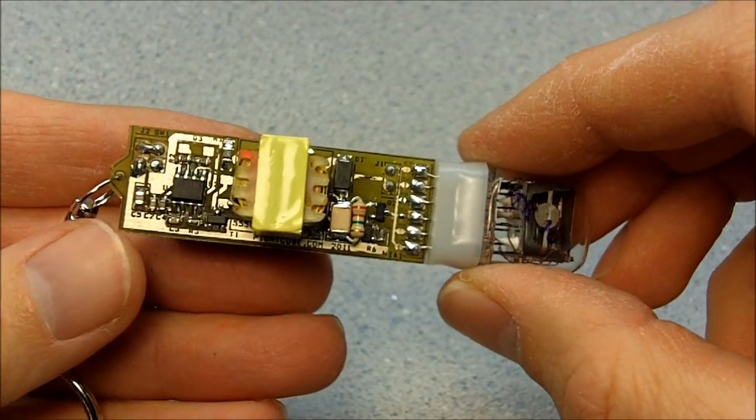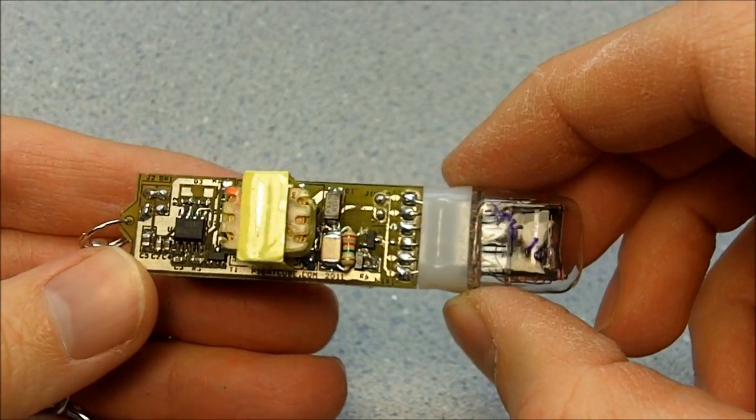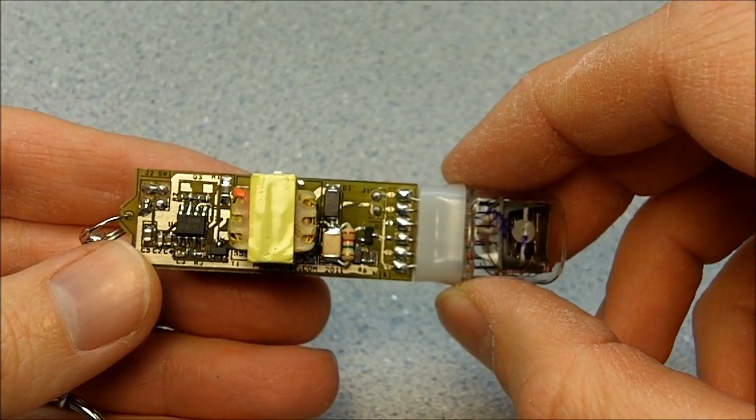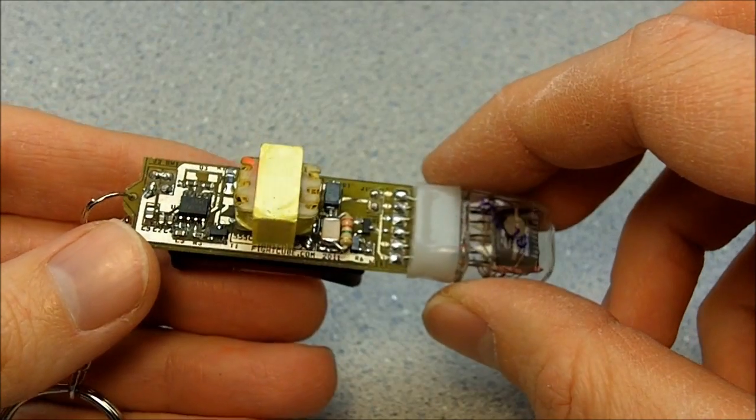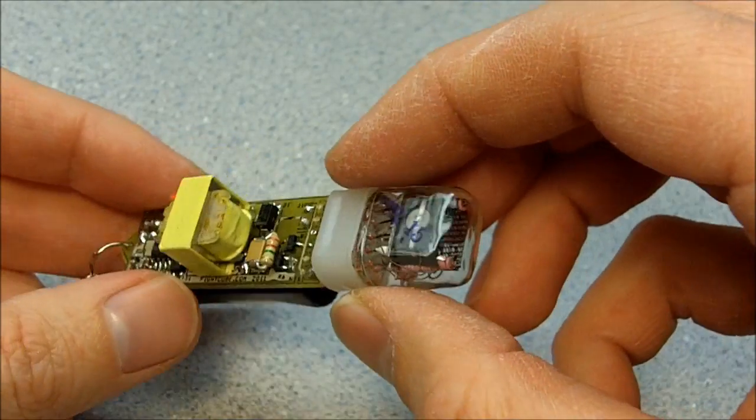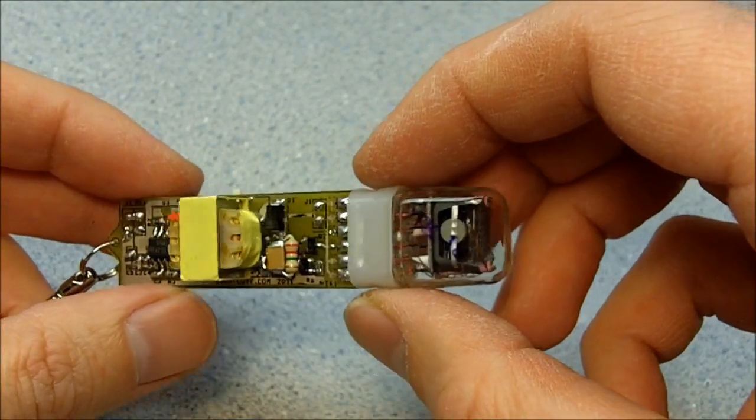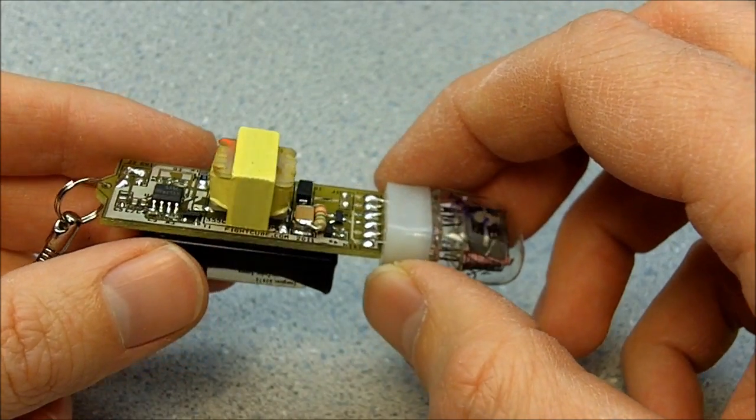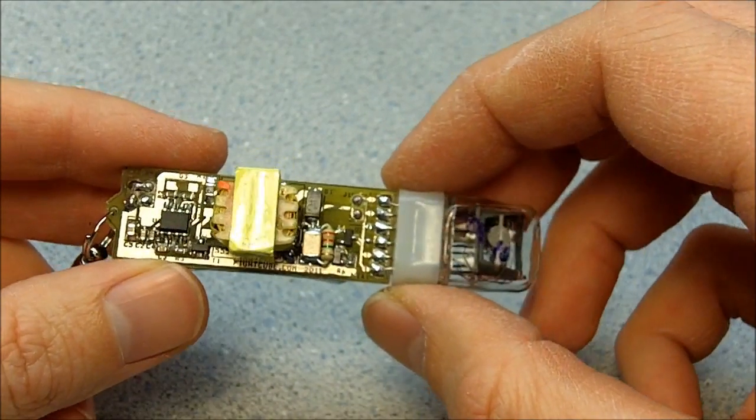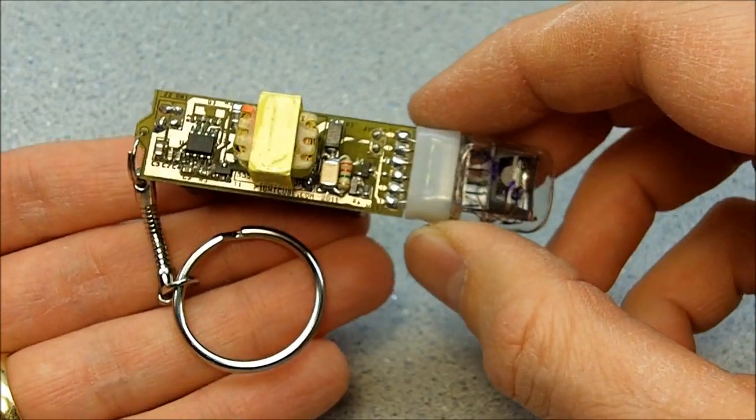Hey how's it going everybody? Brett here from FightCube. This is my 555 contest entry. This is a 555 Nixie keychain. And they're pretty cool. A lot of people make clocks out of them. And I've been making clocks and different things and I thought for the 555 contest I'd make a Nixie tube keychain.